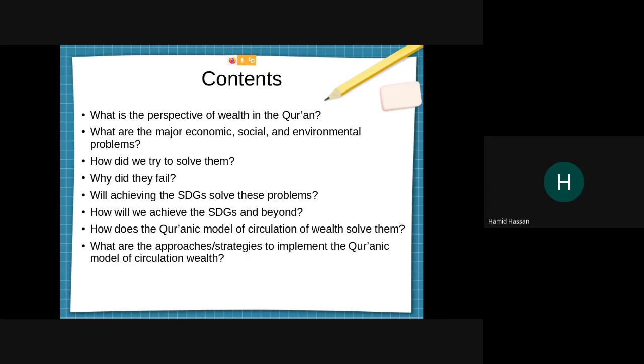The contents of the presentation are: what is the perspective of wealth in the Quran, what are the major economic, social and environmental problems, how did we try to solve them, why did they fail, will achieving the SDGs solve these problems, how does the Quranic model of circulation of wealth solve them, and what are the approaches to implement this model?